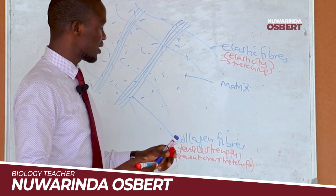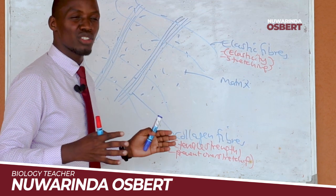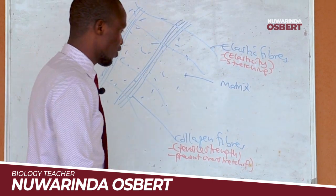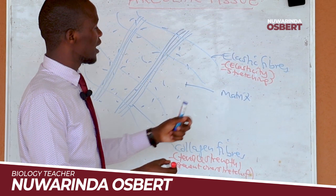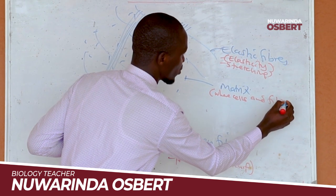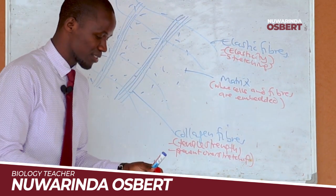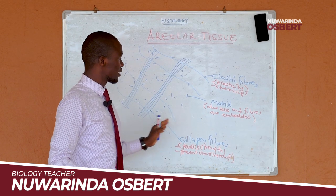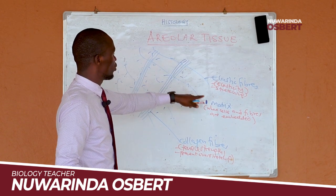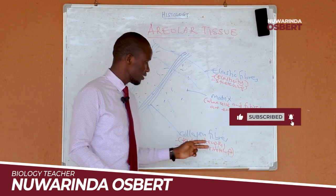We need some stretching, but we also need some strength. So the collagen fibers ensure there is limited stretching. The matrix is where cells and fibers are embedded — that is the work of the matrix. So the areola tissue is made up of a ground substance within which fibers and cells are embedded, with fibers being of two types: elastic and collagen.